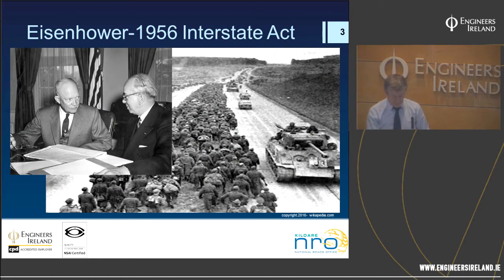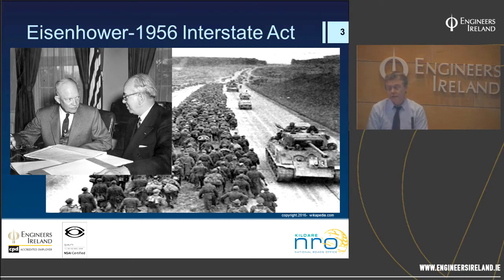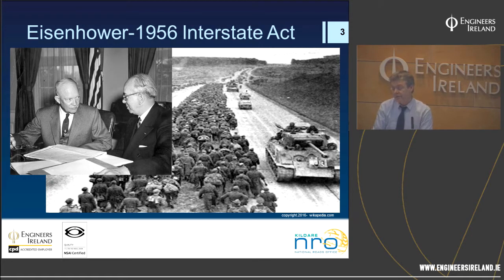Dwight D. Eisenhower was the commander of the Allied forces in Europe. This shows the Americans on the German Autobahn system in 1945. When Eisenhower saw the German Autobahn system it had a huge impact on his thinking about future transport development in America — he decided the Americans had to replicate the system in the United States. When he became president in the 1950s he brought in the 1956 Federal Highways and National Defence Act, which was the real driving force in the creation of the interstate system.